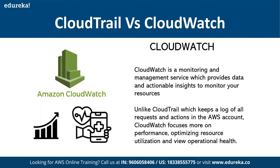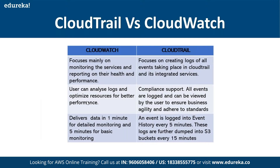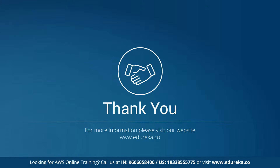Unlike CloudTrail, which keeps a log of all requests and actions in the AWS account, CloudWatch focuses on performance, optimizing resource utilization, and operational health. CloudWatch is proactive monitoring of your infrastructure from an operational standpoint; CloudTrail is recording events from a compliance and security standpoint. CloudWatch delivers data in one minute for detailed monitoring and five minutes for basic monitoring; an event is logged into event history every five minutes and further dumped into S3 every 15 minutes.